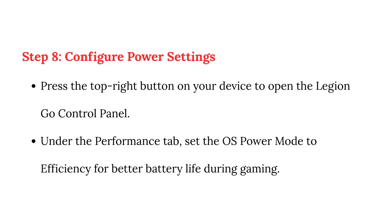Step 8 — Configure Power Settings. Press the top right button on your device to open the Legion Go Control Panel. Under the Performance tab, set the OS Power Mode to Efficiency for better battery life during gaming.